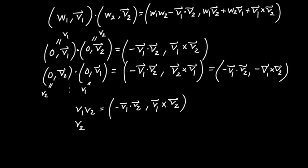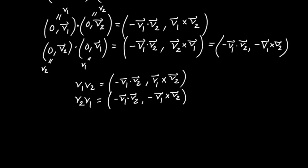And now I'll rewrite the equation for the reversed order: V2 times V1 is equal to minus V1 dot V2 as the new scalar, and the new vector is minus V1 cross V2. Now what I'd like to do is take these two equations and add them together. On the left-hand side I have V1V2 plus V2V1, and I add both right-hand sides: in the scalar parts, I add the scalar parts.